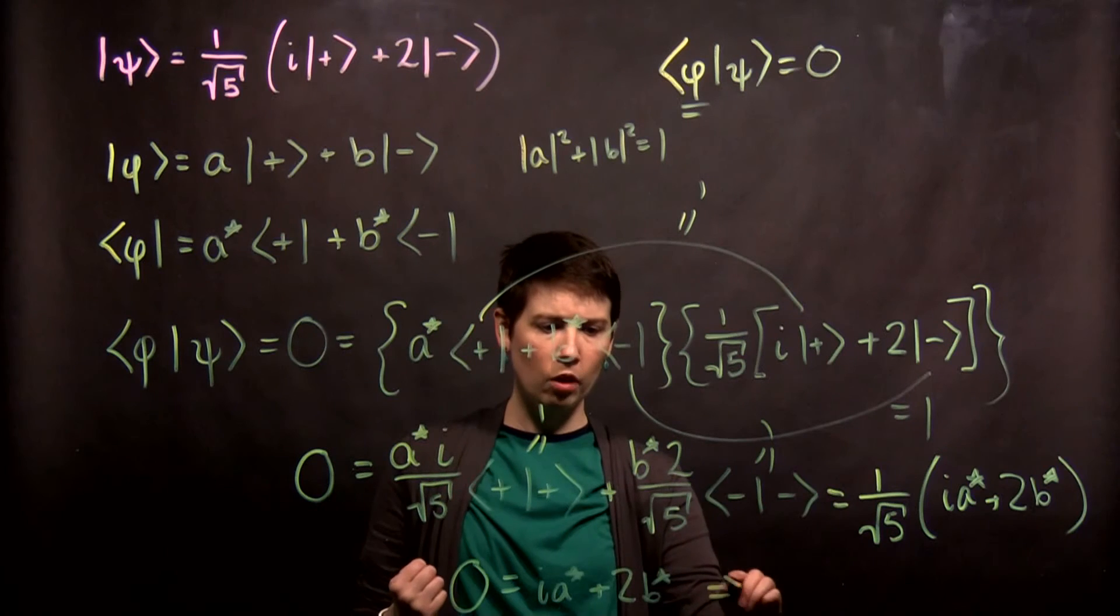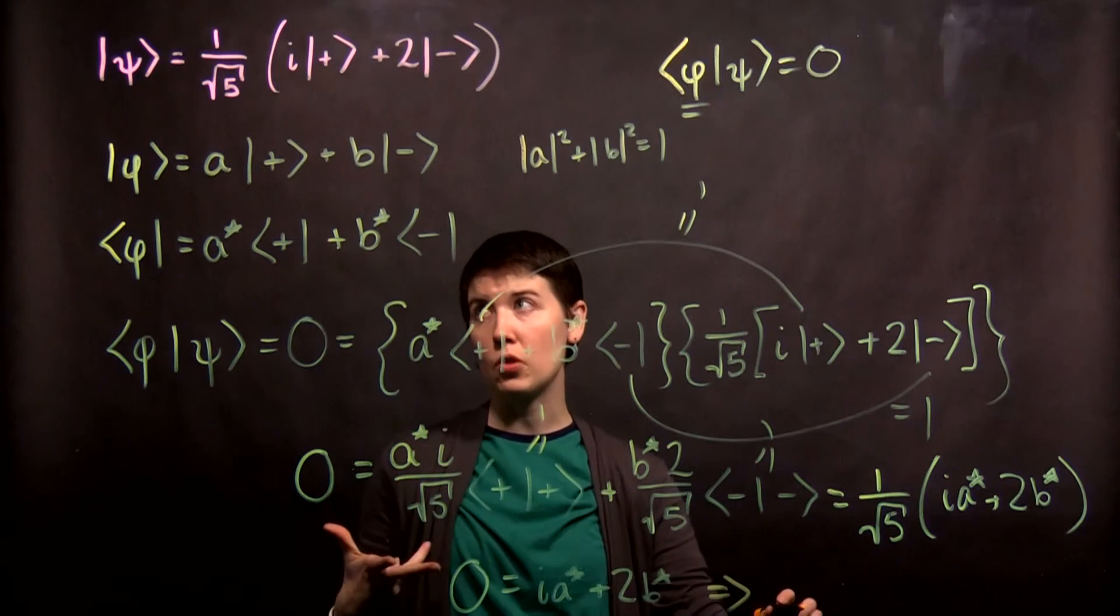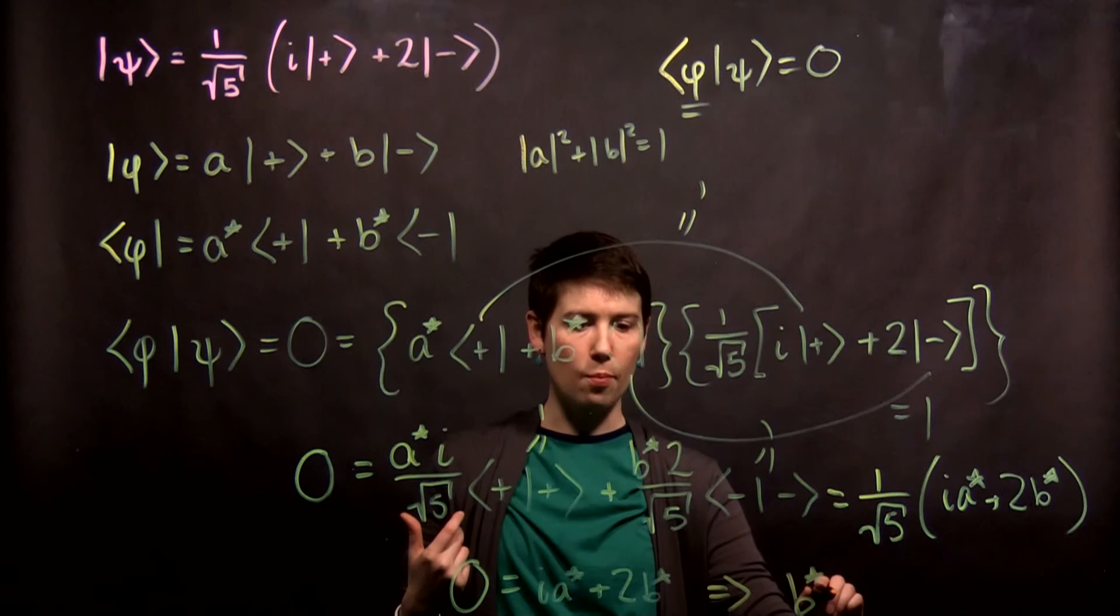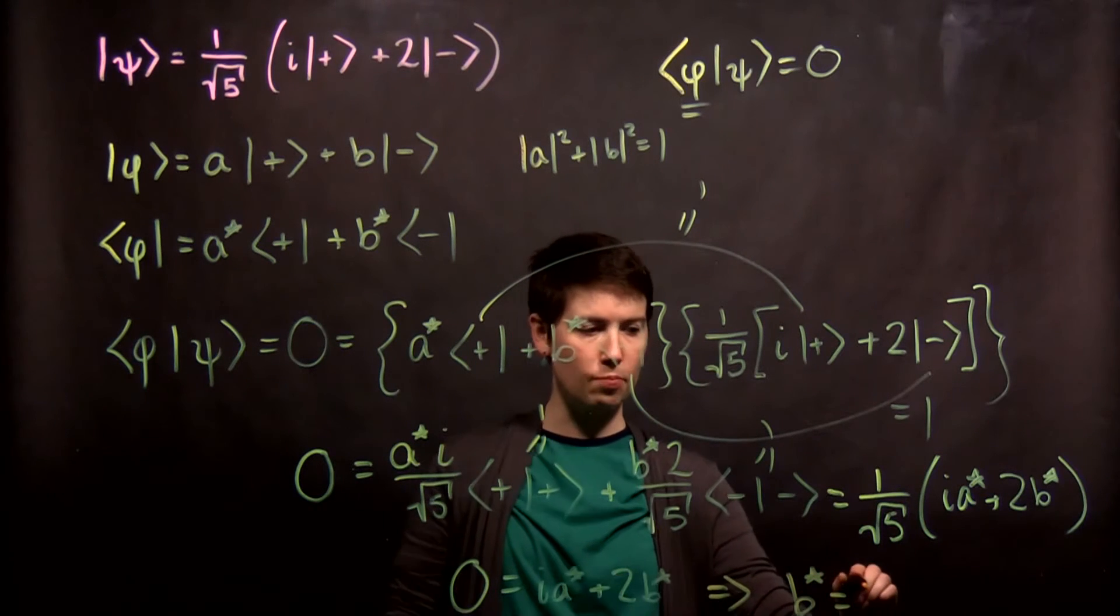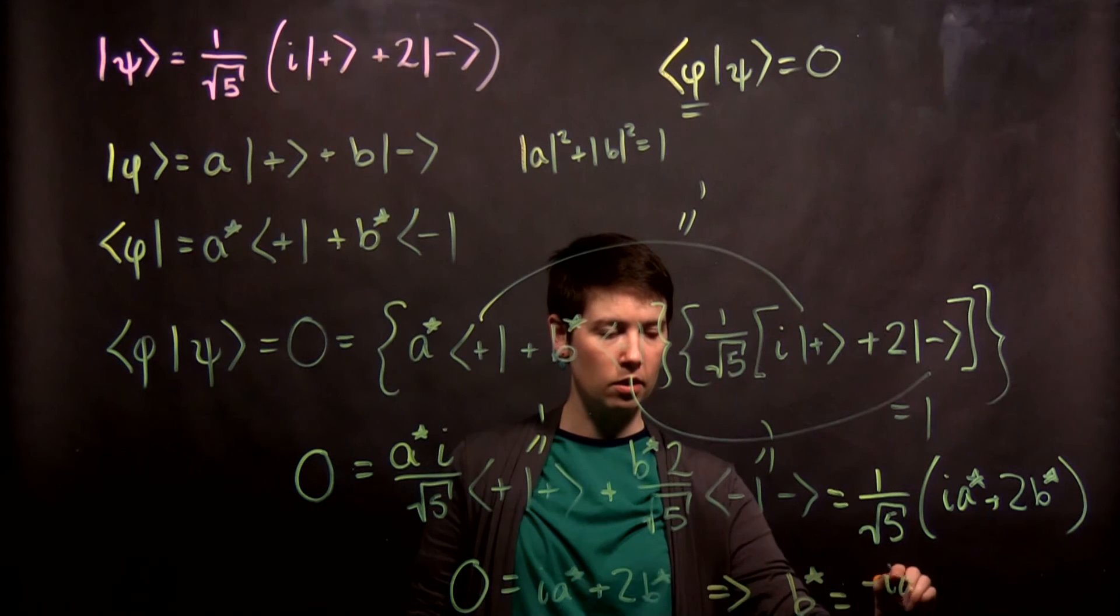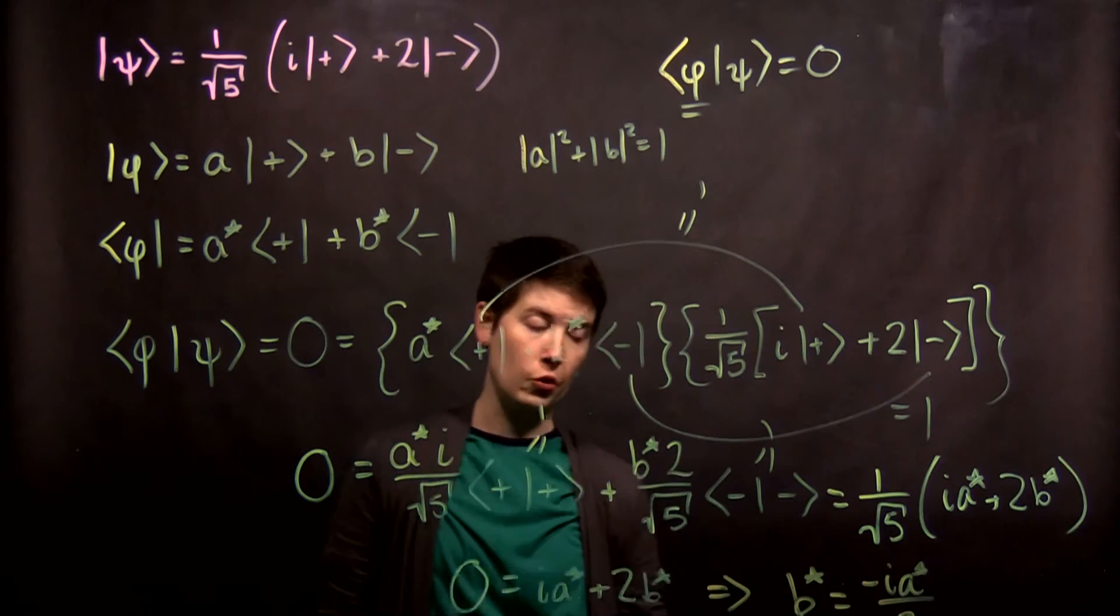So from this, for instance, we want to solve for b star, and we see that b star is going to be equal to negative a star i over 2.